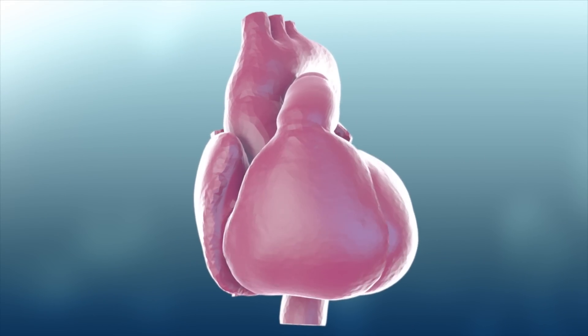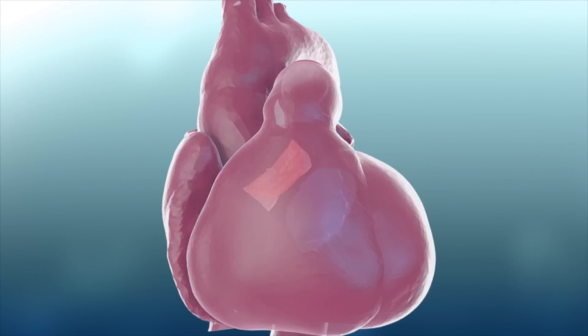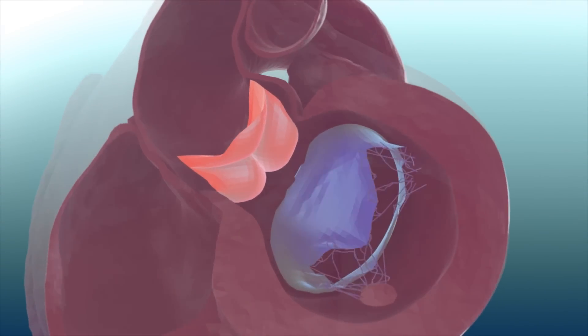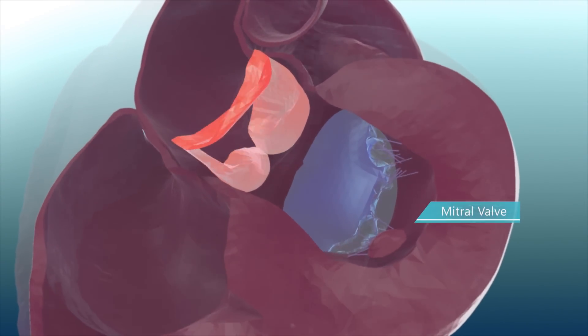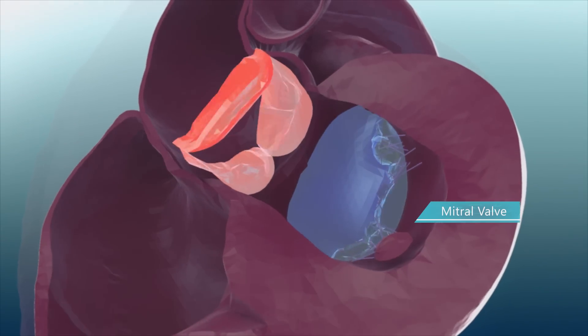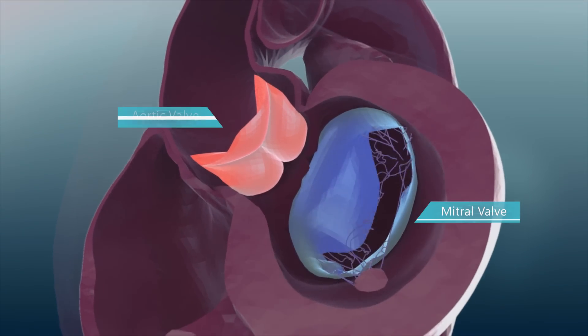The heart has flaps to prevent blood from flowing backwards. In between the left atrium and ventricle is the mitral valve. And in between the left ventricle and aorta is the aortic valve.